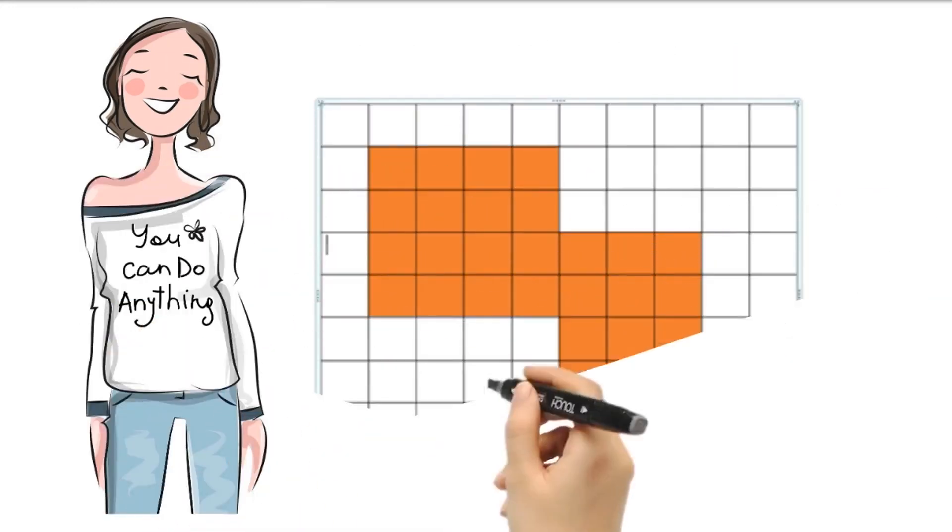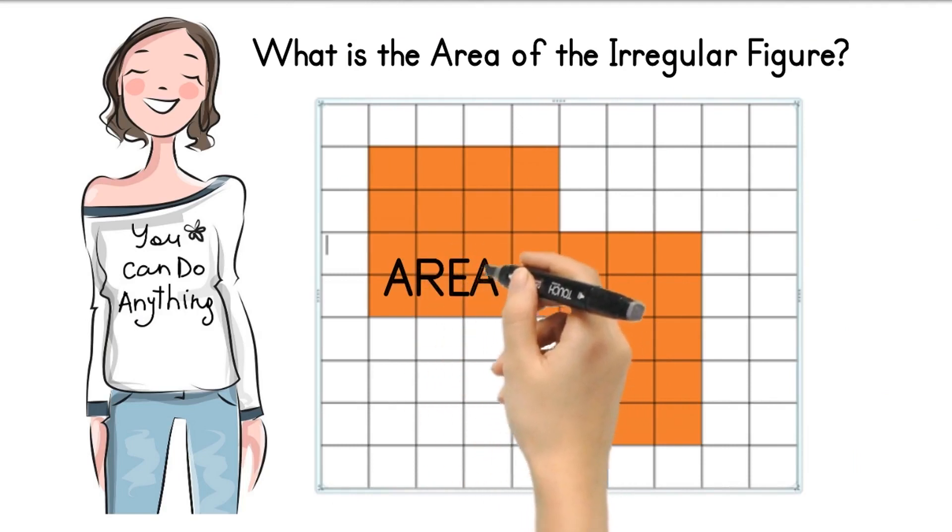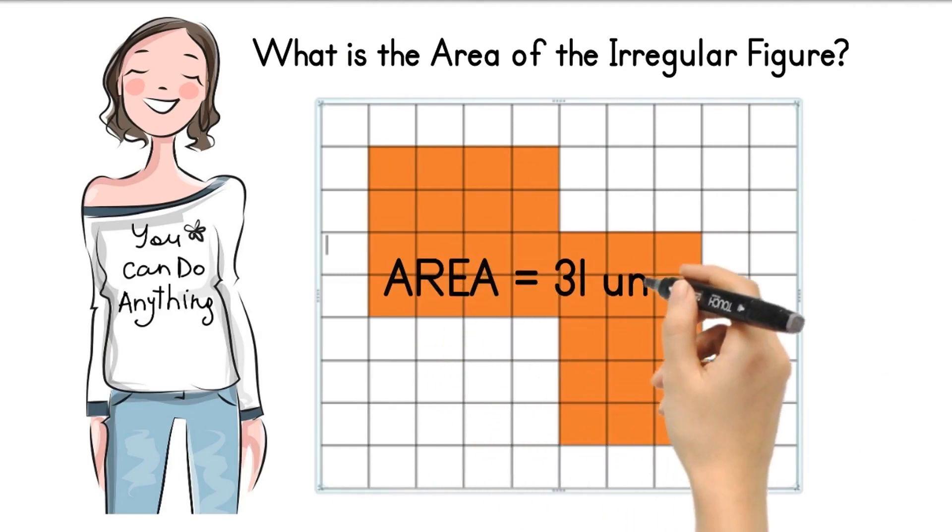I know that this is very easy for you. Very good. You got the correct answer. The area of this irregular figure is 31 units.